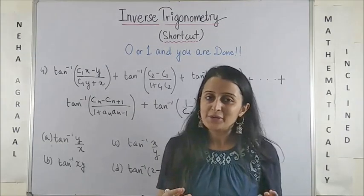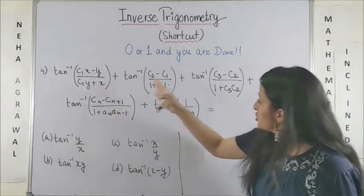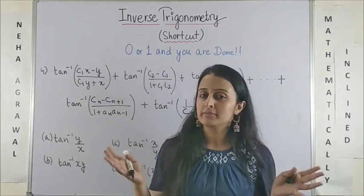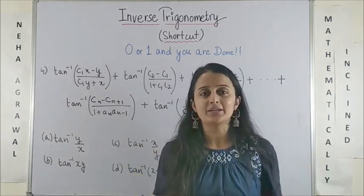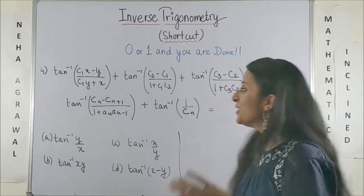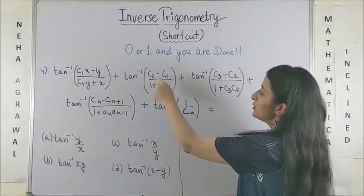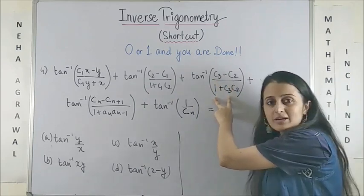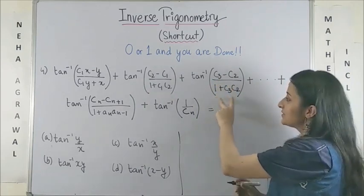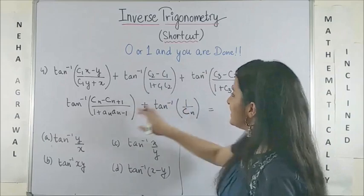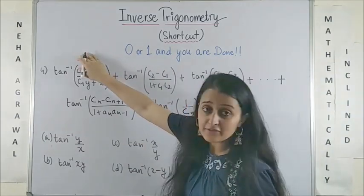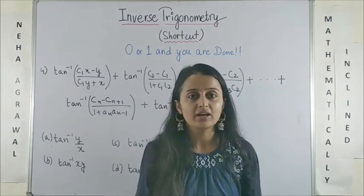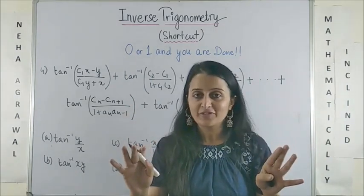Now have a look at the 4th question. If you are given this huge looking expression, now going by your primitive, conventional or as I call it the dinosaur method, what you are going to do is, you would write this as tan inverse C2 minus tan inverse C1. This becomes tan inverse C3 minus tan inverse C2 so on. You would see these cancelling. You will be left with first and the last term and then you will have to apply the formula. That's going to take 4 or 5 minutes.